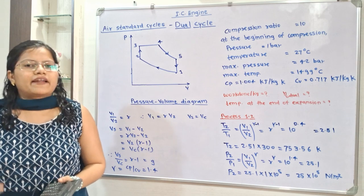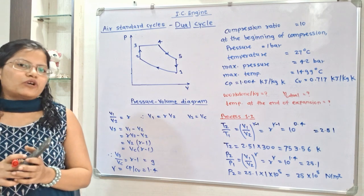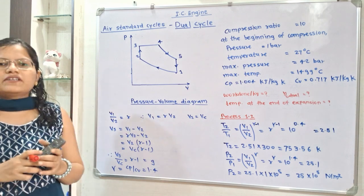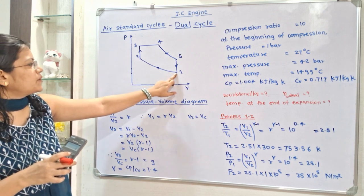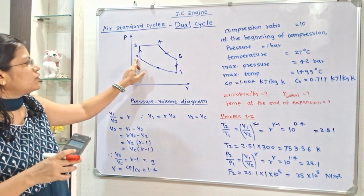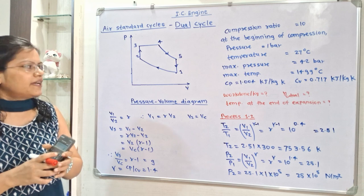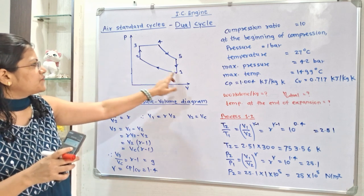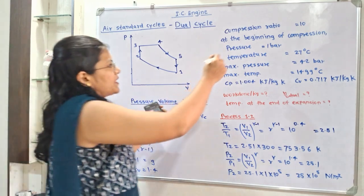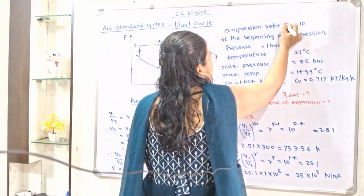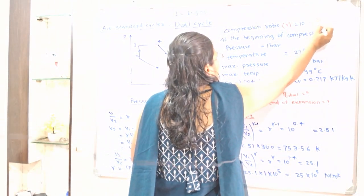Let us understand the given data with the help of the pressure-volume diagram of the dual cycle. The compression ratio is given, and it is due to process 1 to 2 where isentropic compression takes place. This ratio is known as V1 by V2, with notation R. So compression ratio R is equal to 10, meaning V1 by V2 equals 10.